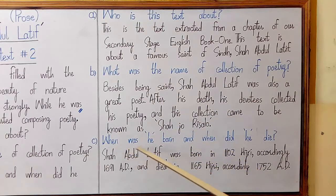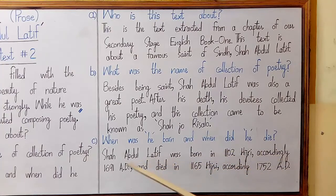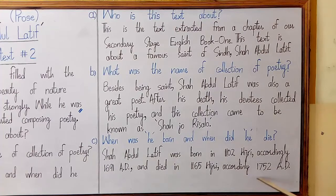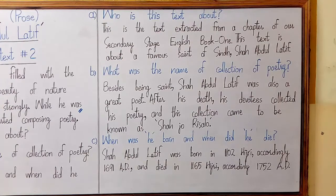Question number 3 — When was he born and when did he die? Shah Abdul Latif was born in 1102 Hijri, accordingly 1691 AD, and died in 1165 Hijri, accordingly 1752 AD. These are the justifiable answers to all 3 questions of reference to context number 2.